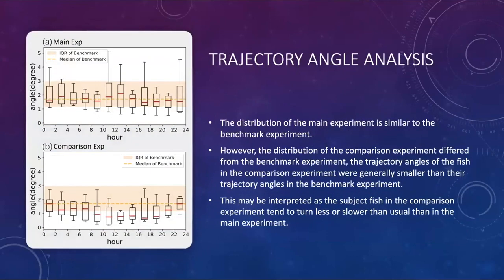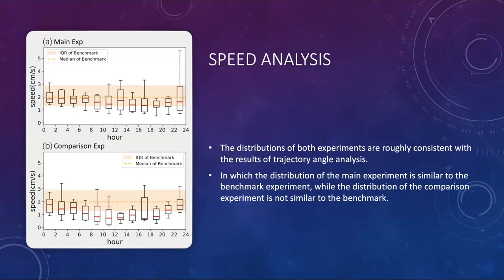For the trajectory angle analysis, you can see for the main experiments, the trajectory angle of the fish doesn't vary very much. Their behavior is similar to their behavior in the benchmark experiments. But for the fish in the comparison experiments, their behavior is different compared with their benchmark behavior. Their turning angle is smaller, especially during the night and most of the time. We found similar results in their speeds. For the fish in the main experiment, it's a bit slower, but for the fish in the comparison experiments, it's much slower compared to the benchmark experiments.